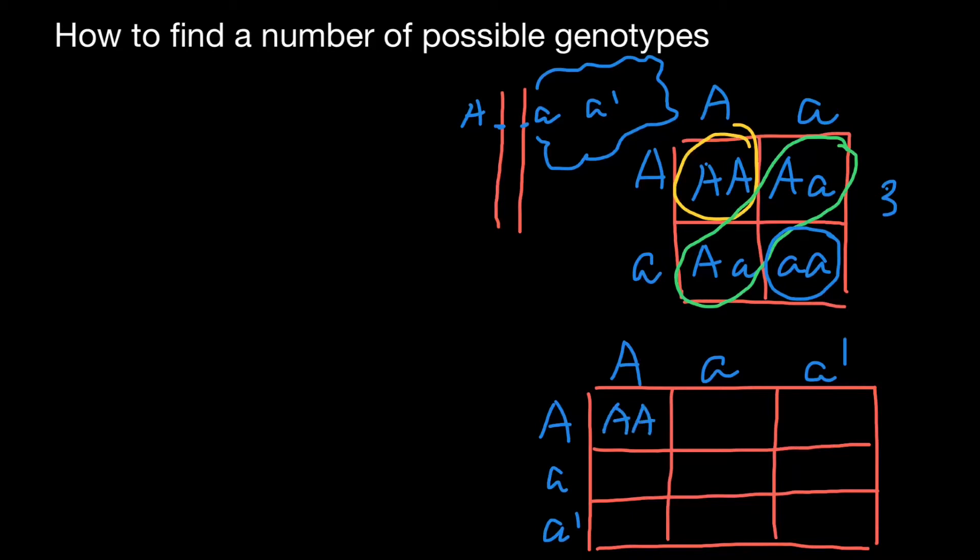And here is going to be our combinations. So this time, this is going to be square three by three. Again, we are not going to get nine genotypes. Take a look. Capital A capital A here. Here, small a small a here. Small a prime small a prime here. And I will explain why I start to fill this table in this way. Next, we would have capital A small a here. Capital A small a prime here. Capital A small a here. And small a small a prime here. And the last one would be small a small a prime here.